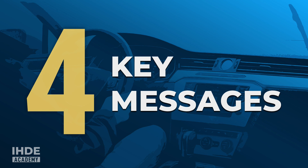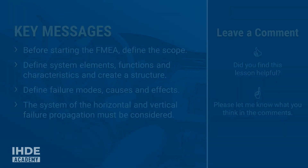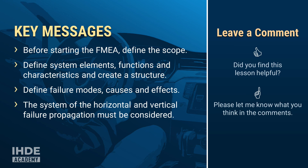That was a lot of new information. To conclude, here are the four most important key messages: define the scope before starting the FMEA; define system elements, functions, and characteristics and create a structure; define failure modes, causes, and effects; and the system of horizontal and vertical failure propagation must be followed. If you found this lesson helpful, please leave a comment. Thank you, take care, and see you next time.